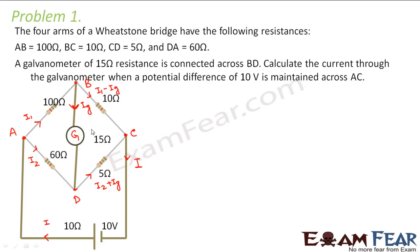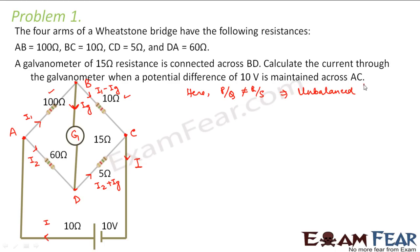Now in this case, as it looks like a Wheatstone bridge, first check whether the bridge is balanced or not. If the bridge is balanced, the deflection through the galvanometer will be zero and there will be no current in the galvanometer. In this case, P by Q is equal to 100 by 10, that is 10, and R by S is 60 by 5, that is 12. So P by Q is not equal to R by S — this is an unbalanced bridge.